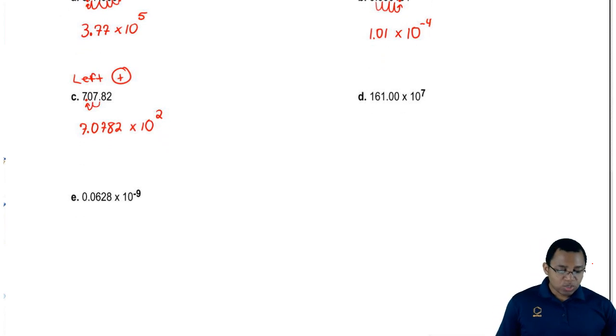For D now, it's 161.00 times 10 to the 7. Remember, we need that coefficient to be between 1 and 10, so we need that decimal to be between this 1 and this 6. We have to move it over 1, 2 spaces to the left.